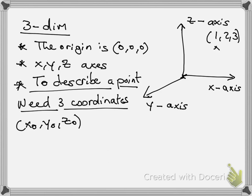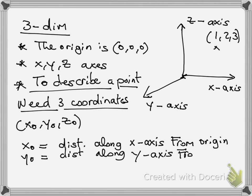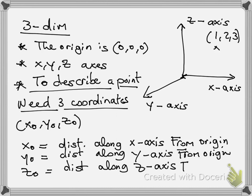So what is x₀? x₀ is the distance along the x-axis from the origin. y₀ is the distance along the y-axis from the origin. And similarly z₀ is the distance along the z-axis from the origin.